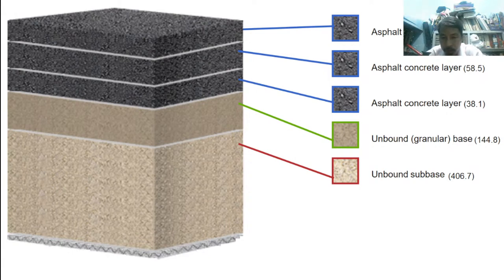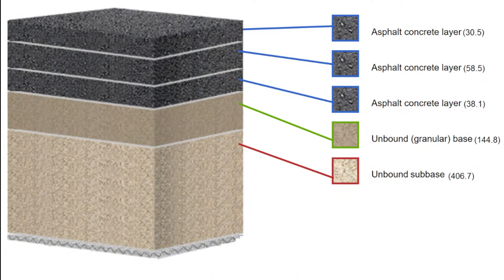On your screen is a diagram of a pavement showing different layers. We have the subgrade as the very thin bottom layer, then the unbound sub-base above it. Next is the unbound or granular base — unbound meaning no presence of bitumen or cement.